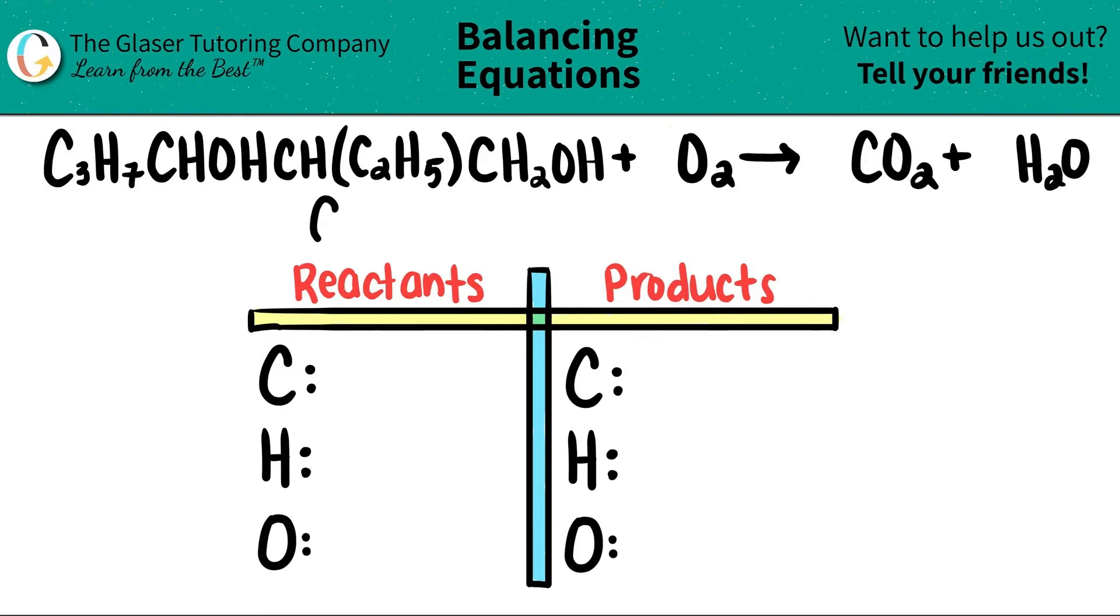How many carbons do we have? Well, we have three here, one here, another one here, two here, and one here. That's three, four, five, six, seven, eight. So this can really be simplified into C8.